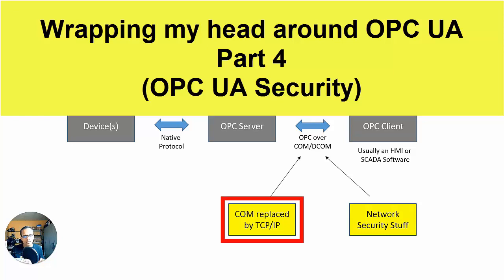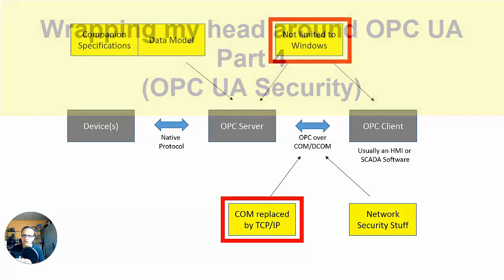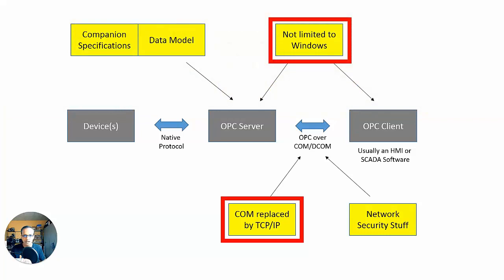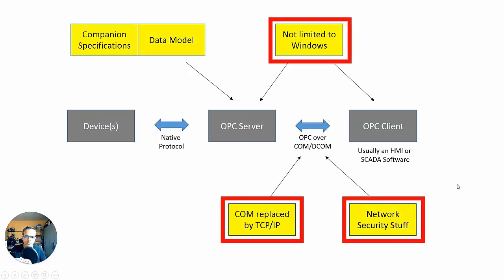We're on to part four now. What I plan to do in this video is show you an example using some simulation software of endpoint URL, but I decided to do the network security stuff first, then move on to the example. So we'll look at the example in the next video, the video after this one. So in this one, I'm going to tackle the network security stuff.